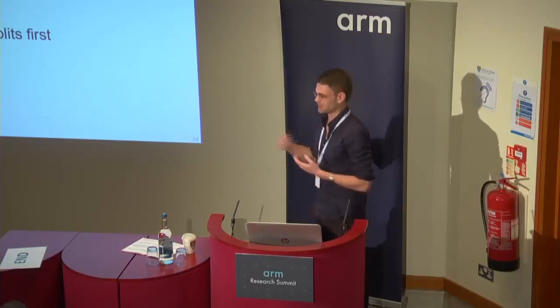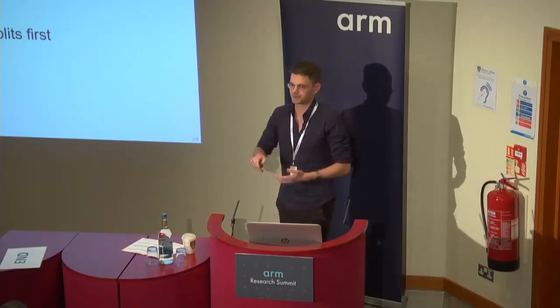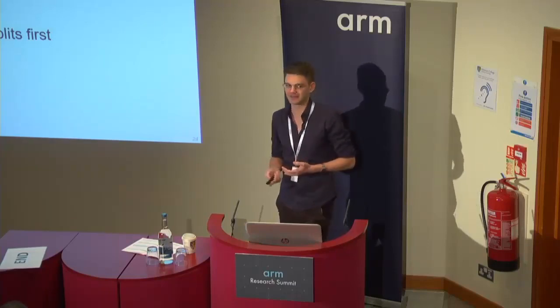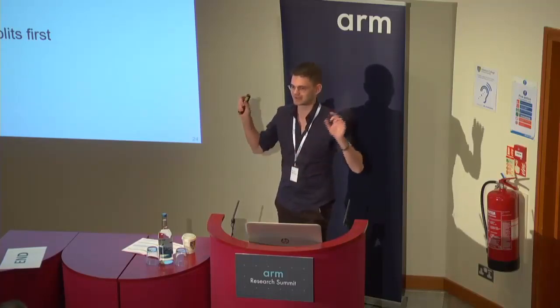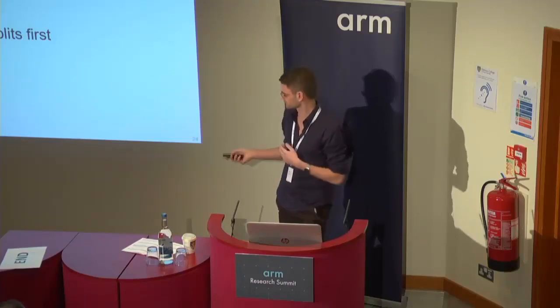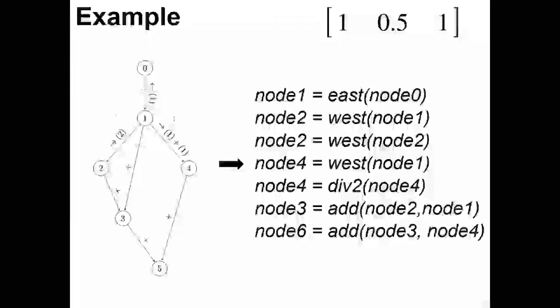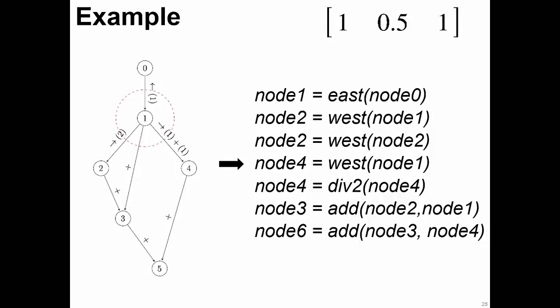We also prune results we already know yield worse outcomes than the best solution found so far, and we use static analysis to evaluate splits based on a heuristic of how likely they are to produce good results. For example, for a filter like [1, 5, 1], the algorithm produces this computational tree where every node represents a sub-result, which are then combined. This yields the program with generalized register names, before register allocation.